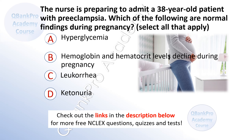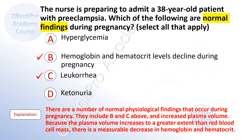Hemoglobin and hematocrit levels decline during pregnancy. C. Leukorrhea. D. Ketonuria. The correct answer is B — hemoglobin and hematocrit levels decline during pregnancy — and C, leukorrhea. There are a number of normal physiological findings that occur during pregnancy, including B and C, as well as increased plasma volume. Because the plasma volume increases to a greater extent than the red blood cell mass, there is a measurable decrease in hemoglobin and hematocrit.